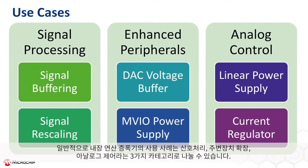The use cases for the integrated op-amps generally fall into three categories: signal processing, peripheral enhancement, and analog control.